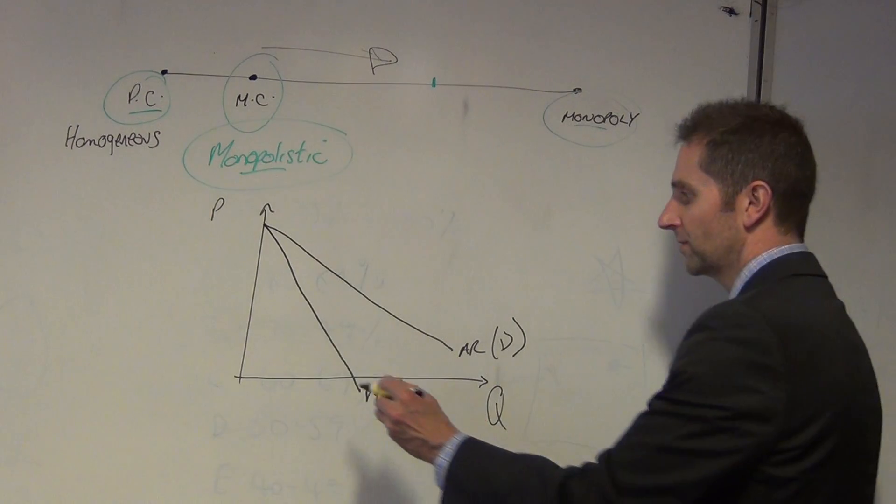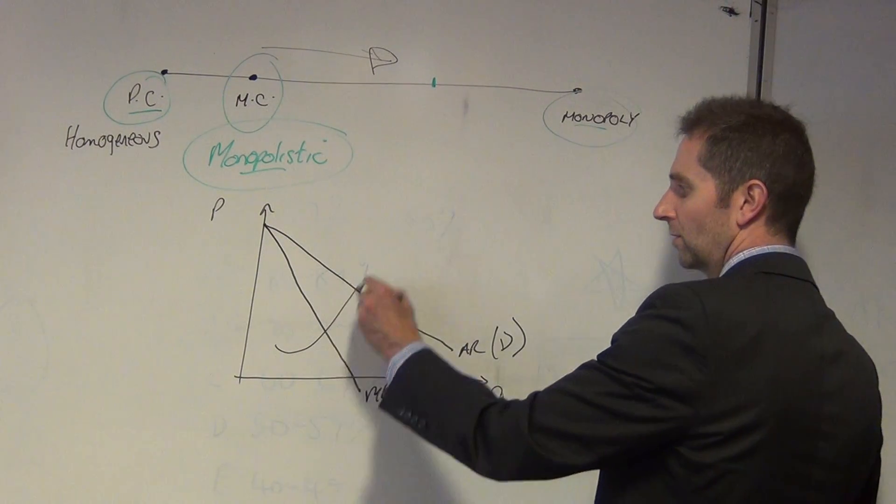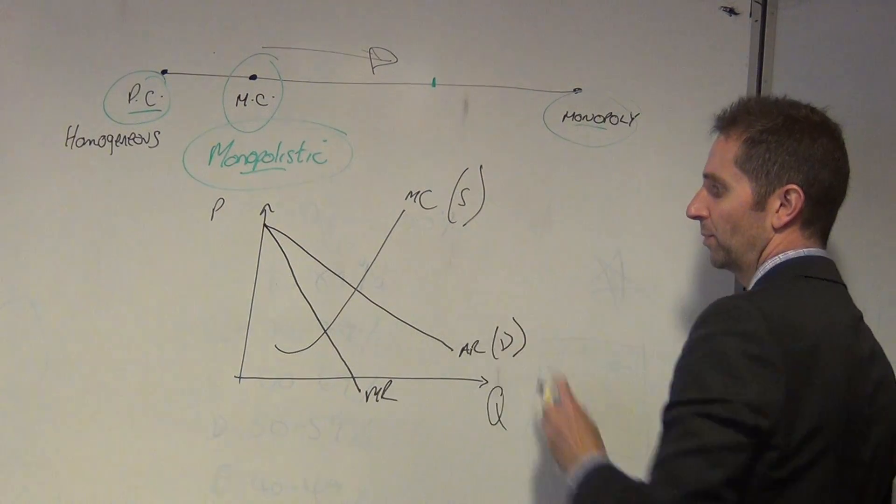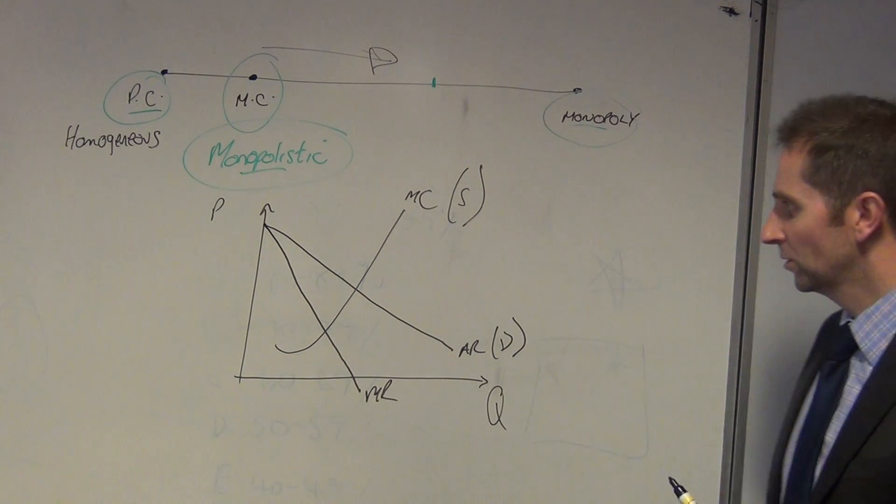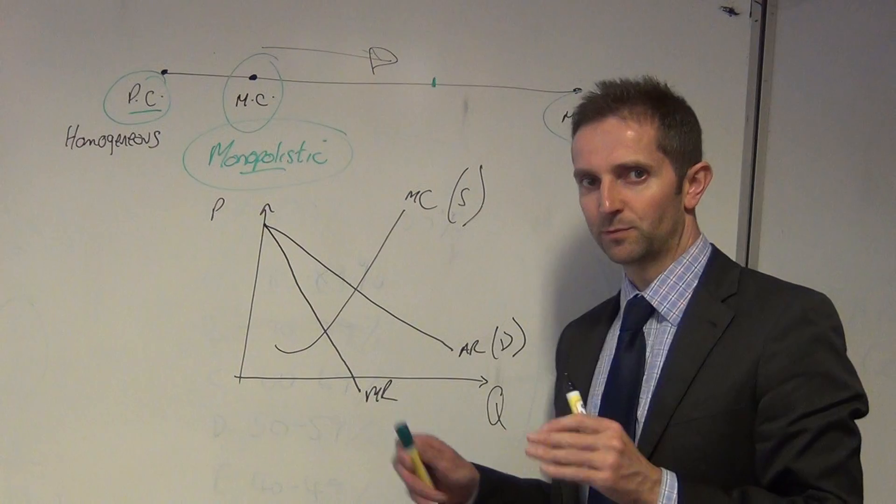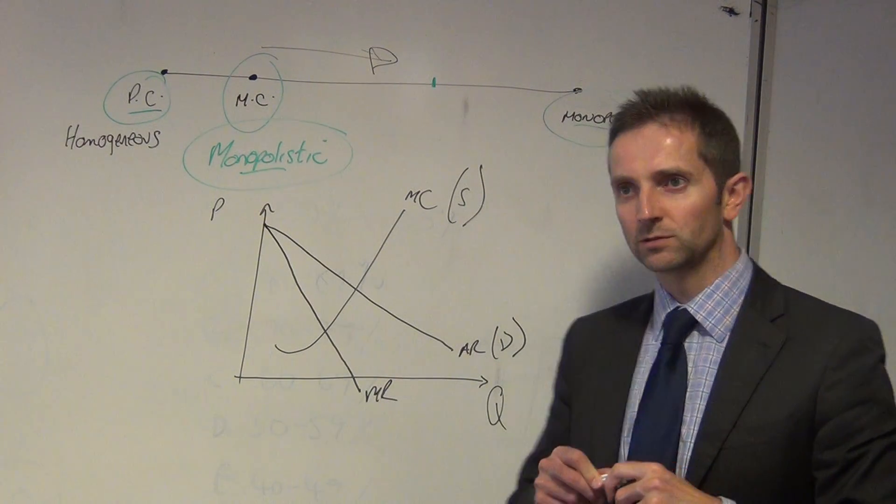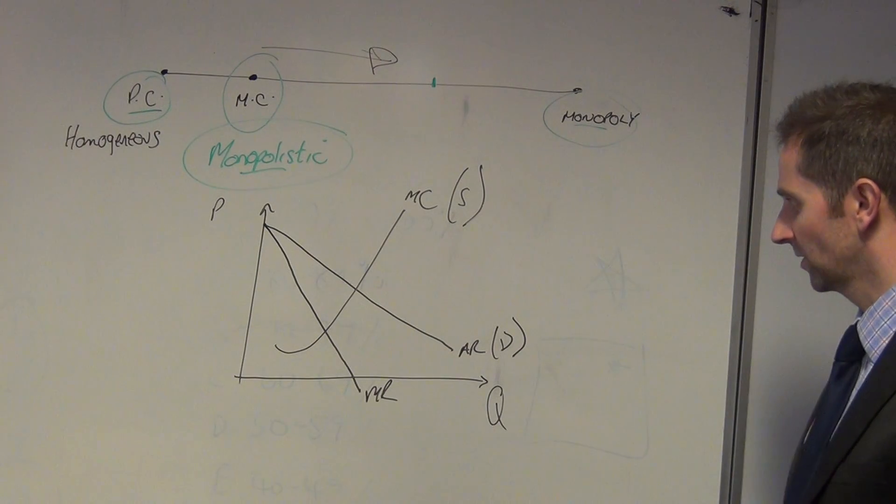And again, average revenue being demand. It's my preference to include the marginal cost curve next, like so. That's been our supply curve. And then to do all of your profit maximizing output points. And after that, put your average cost curve on. I think it's much easier, as I've said previously.